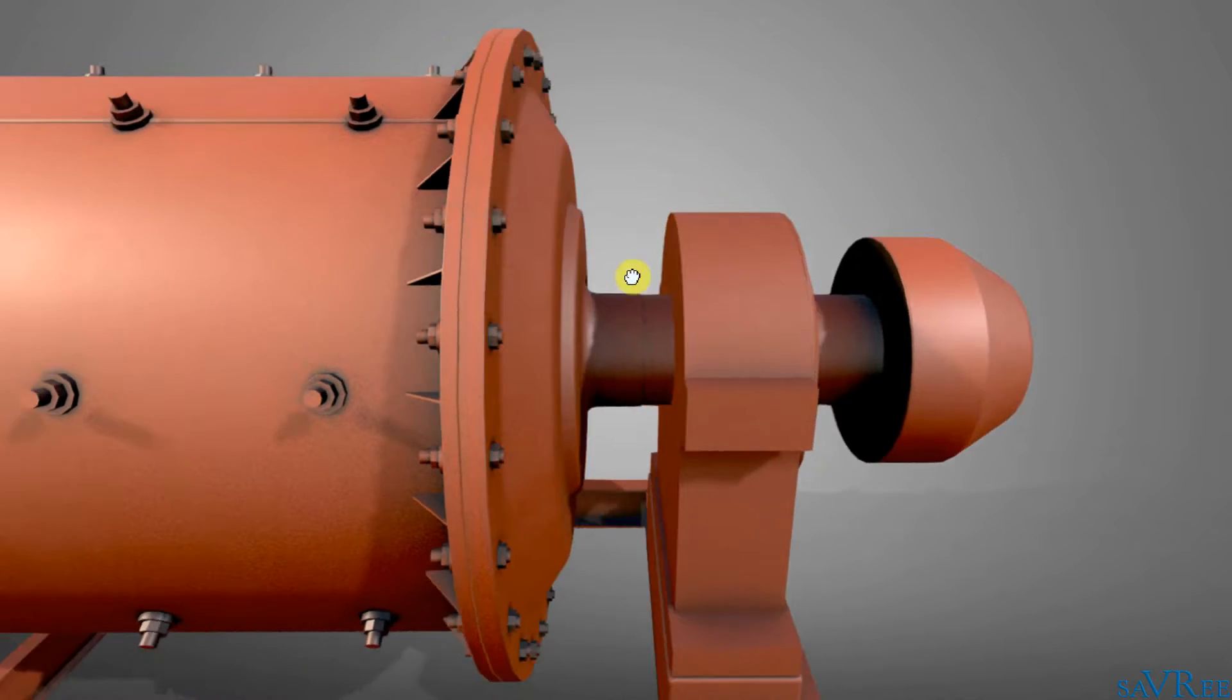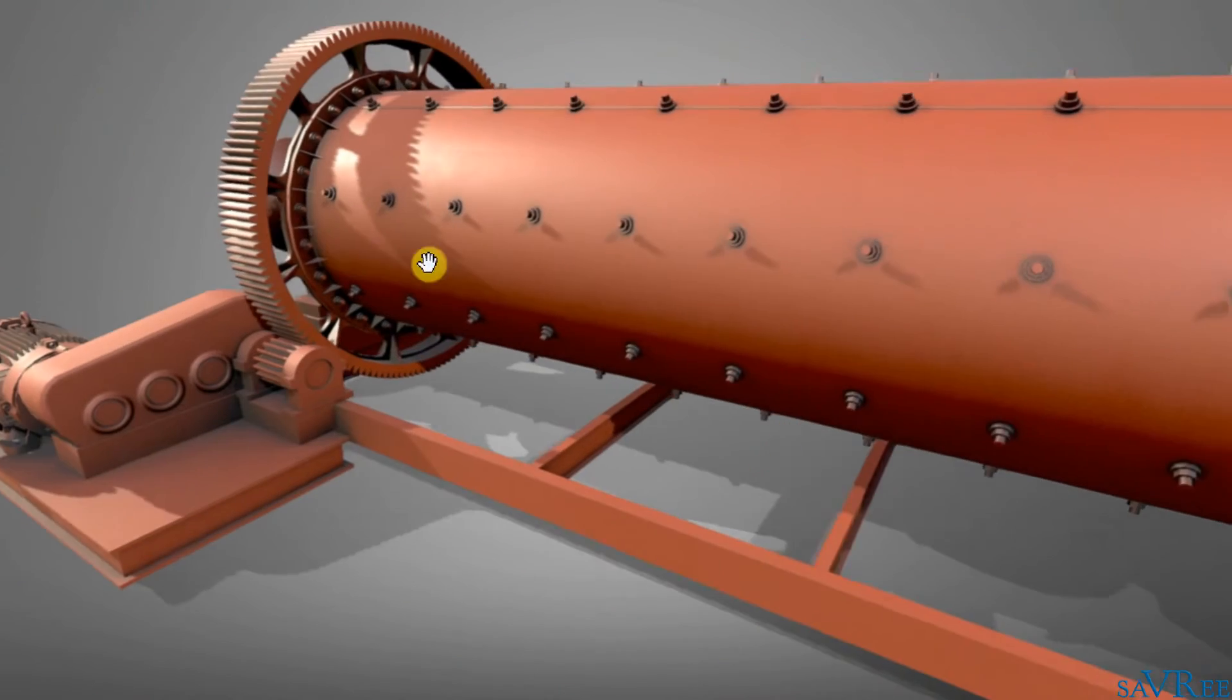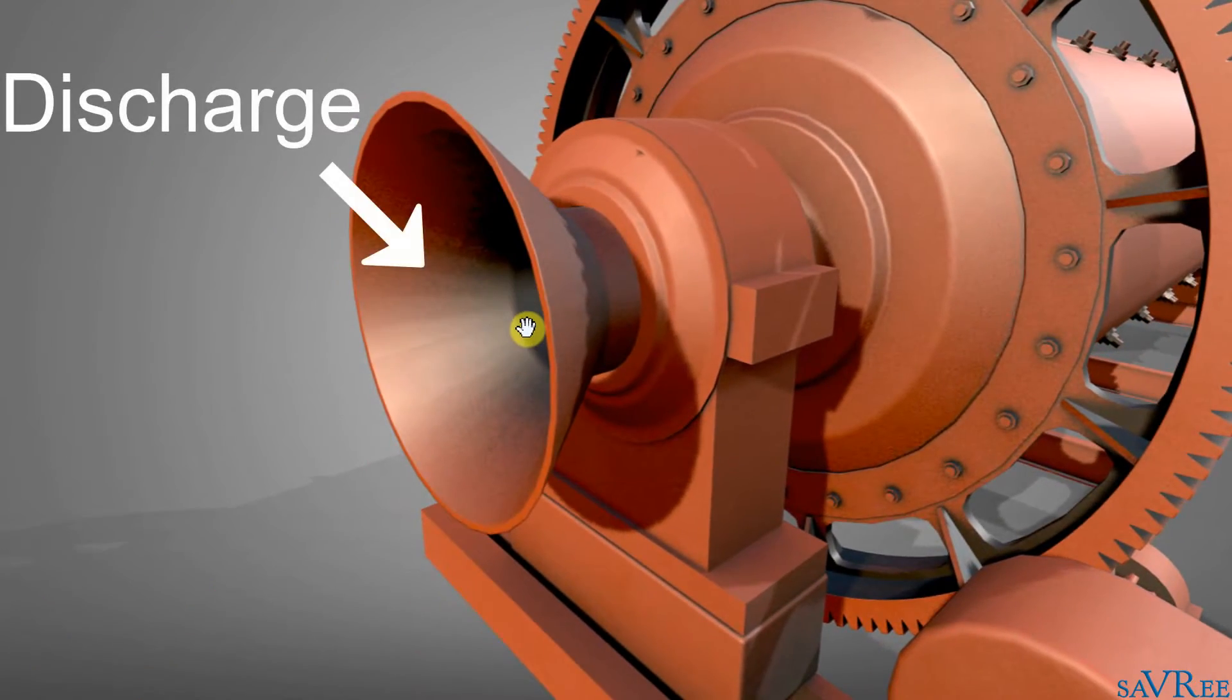We feed material into the ball mill through this section here. That is our inlet. And we have a discharge at the opposite end, which is this section here.